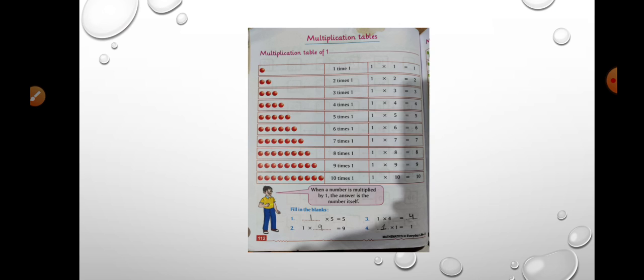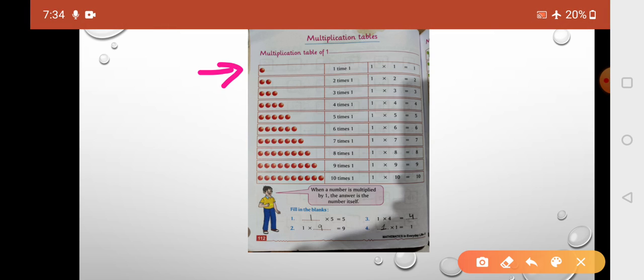Next is multiplication tables — the multiplication table of one. Here we have red colored ball-type circles drawn. The first one: one time one, meaning there is only one group of one. So one time one — one ones are one.